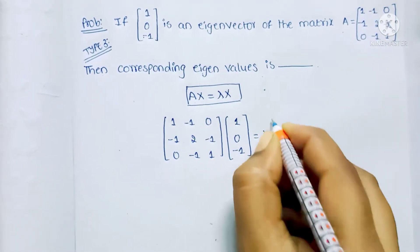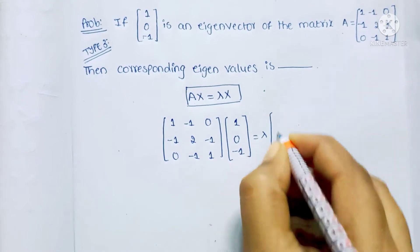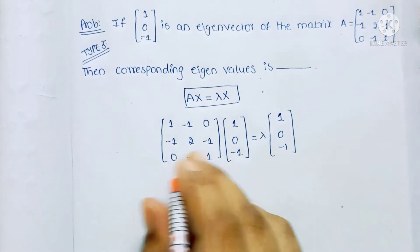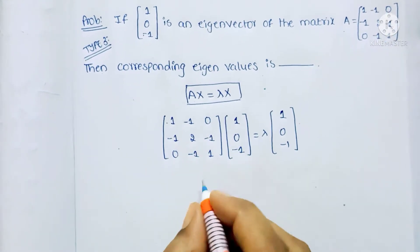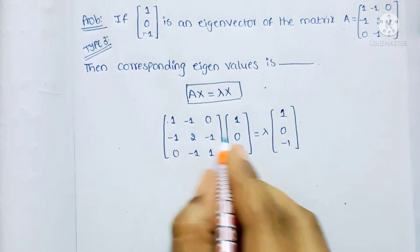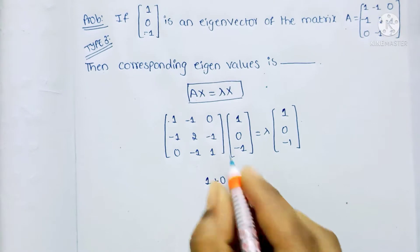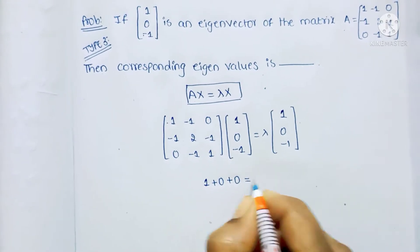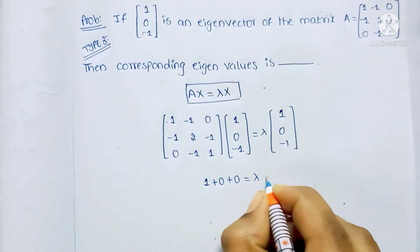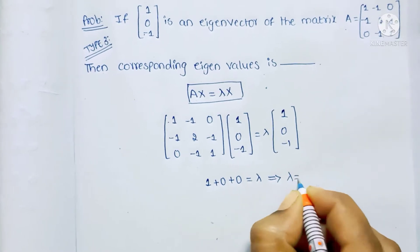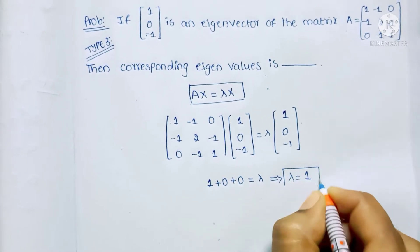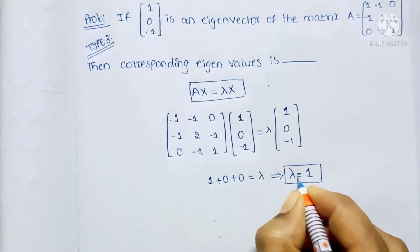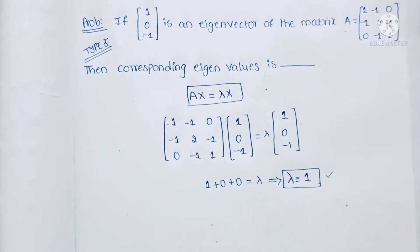Writing this in equation form: 1×1 + (-1)×0 + 0×(something) = λ×1. From this we get the lambda value as 1, so the eigenvalue λ = 1. That is the answer.